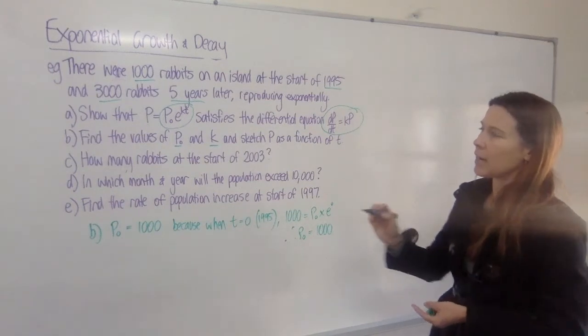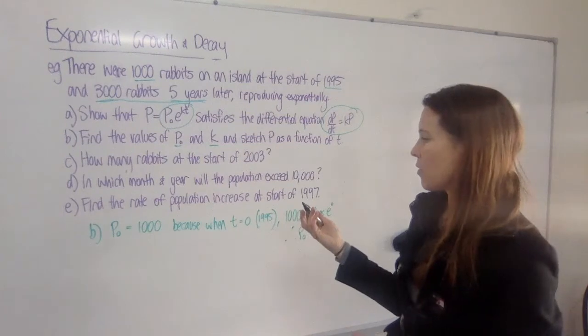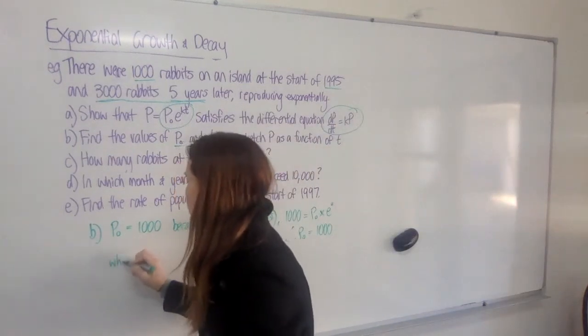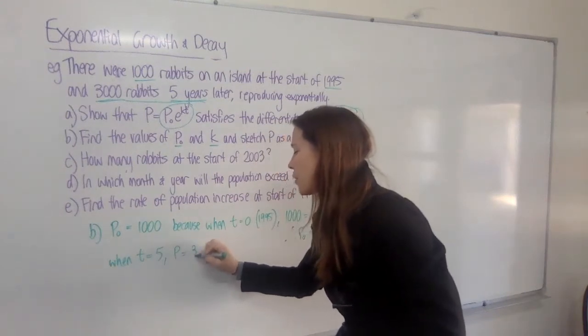Okay, now we need to find the value for k. Now, we'll need to use this clue that five years on, there were 3,000 rabbits. So I'm going to write, when t equals 5, P is 3,000.